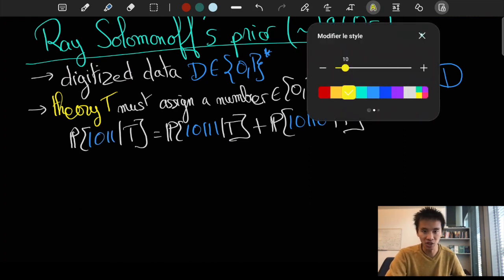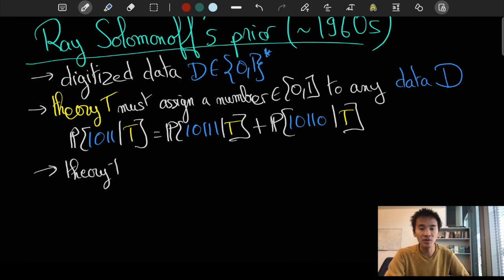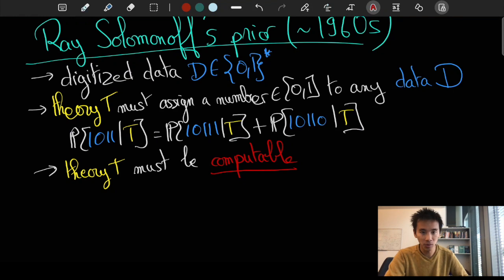Now, building upon the work of Alonzo Church and Alan Turing or perhaps on the idea that computations encode patterns as we discussed in the previous video, Solomonoff also argued that the theory T must assign probabilities in a computable manner. In other words, the theory T must be describable as a program written in a Turing-complete programming language like Java or Python and given any observed data D, the execution of the program must output the probability of the data D given the theory T.